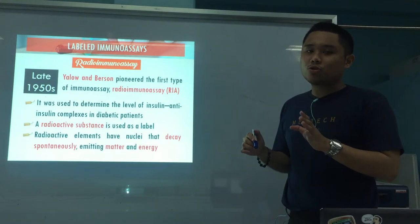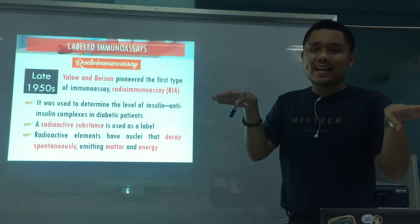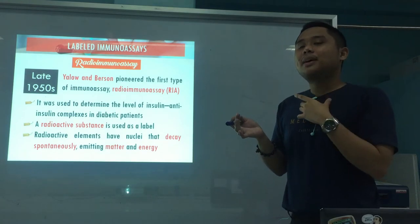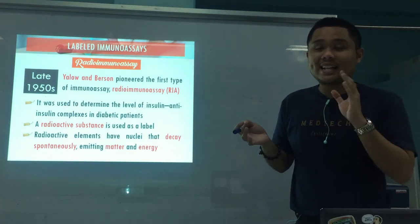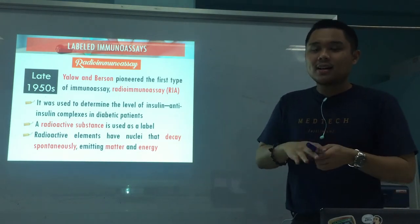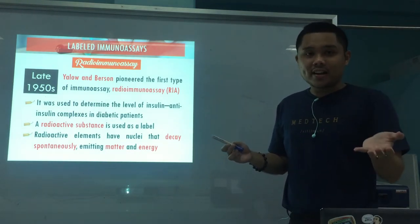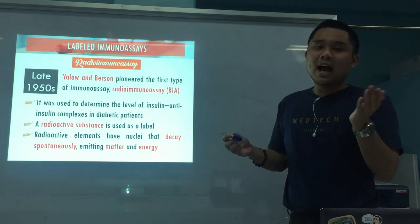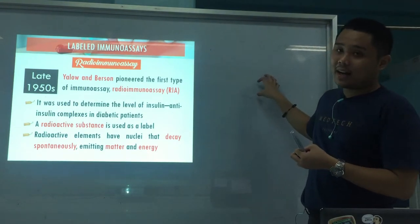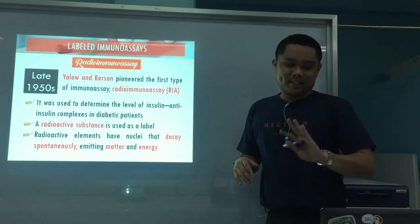Before that, I forgot to mention: for non-competitive immunoassays, the solid phase can have either antigen or antibody attached, okay? Because it would depend on the test and what you are detecting. If you are detecting antibody from the patient, then antigen is bound to the solid phase — like in tubes or microtiter plates. Or if you want to detect antigen from the sample, then of course, antibody is attached to your solid phase.